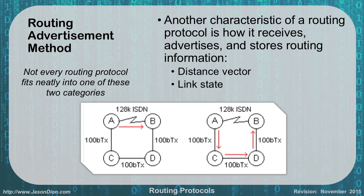Another characteristic of routing protocols is how they receive, advertise, and store routing information. This can be either distance vector — number of hops — or link state, based on speed, bandwidth, and delay. Not every routing protocol fits neatly into one of these two categories. EIGRP, the Cisco protocol, combined both, while OSPF is purely link state and RIP is purely distance vector.